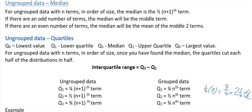For the median in grouped data, it would just be (1/2) × 9 = 4.5, so the 4.5th value.